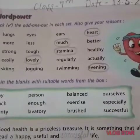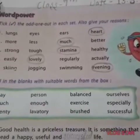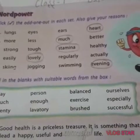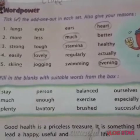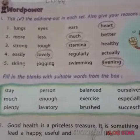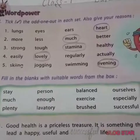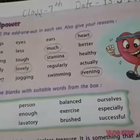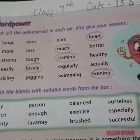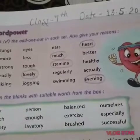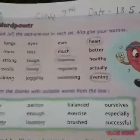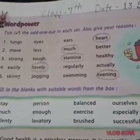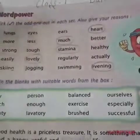All these are our body parts. But I have circled heart. Why have I circled heart and not lungs, eyes, or ears? It is because the human body has only one heart. All others are found in pairs. That is why I have circled heart.